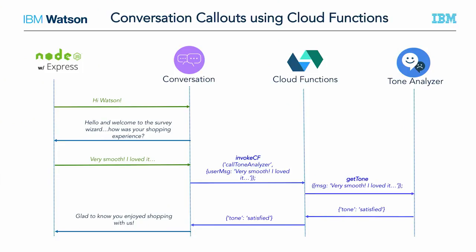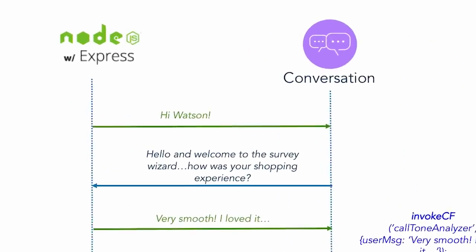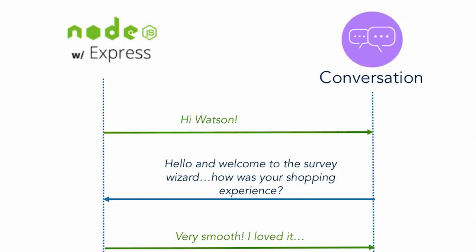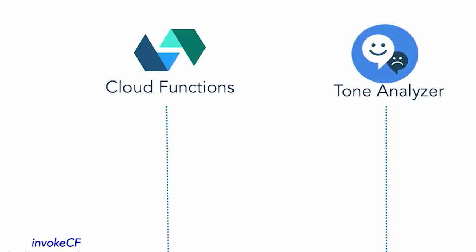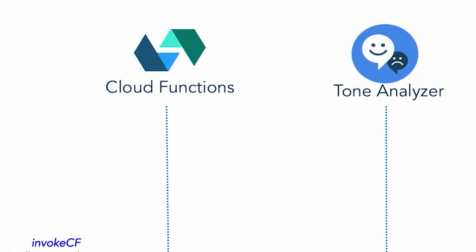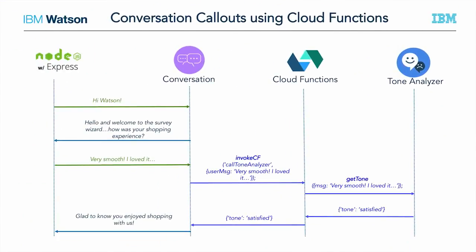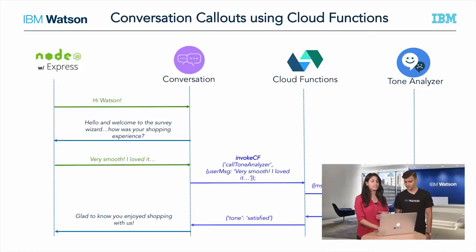This is a simple sequence diagram which shows what's happening at the back end. Imagine you're a developer with an existing app — it could be a Node app running on Express that's already talking to Watson Conversation. You see two pieces on the left-hand side: the app itself with Conversation, and then the two additional features we're talking about — Cloud Functions and Tone Analyzer — on the right-hand side. If you already have the left-hand side set up, it's really easy to add the right-hand side.